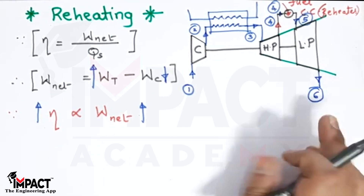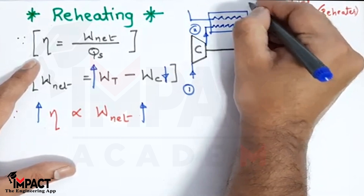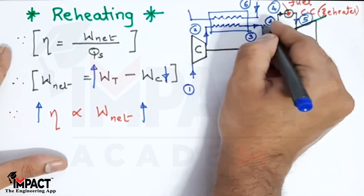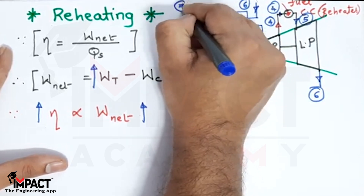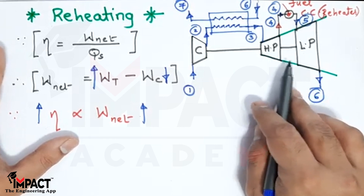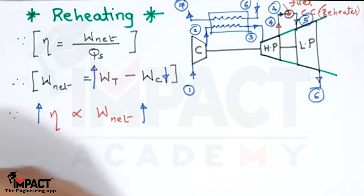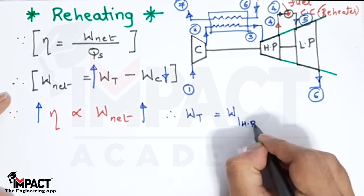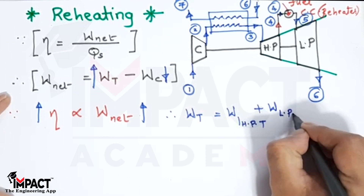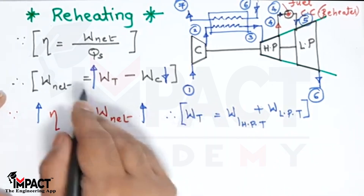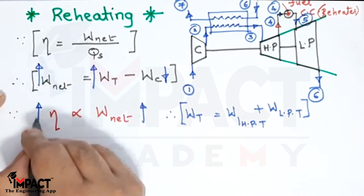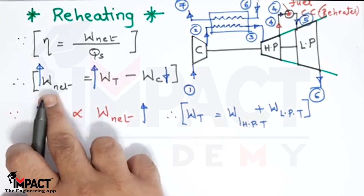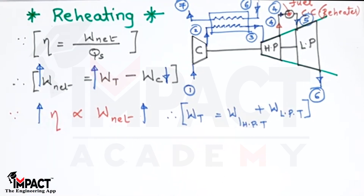The exhaust leaving the high pressure turbine is reheated in the reheater. It enters the reheater at point four and leaves at point five, where it enters the low pressure turbine for another expansion, giving exhaust gases at point six. If these exhaust gases are returned to heat the air coming from the compressor, that cycle is called the regeneration cycle, and they leave at point seven. With two turbines employed, turbine work equals the work from the HP turbine plus the work from the LP turbine.